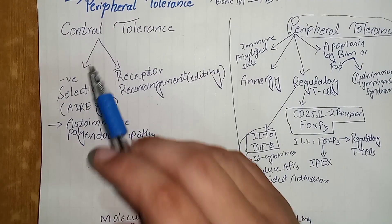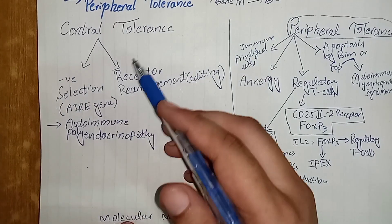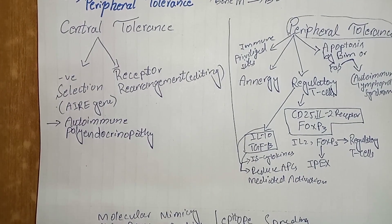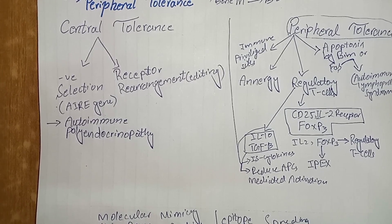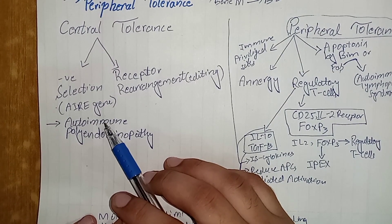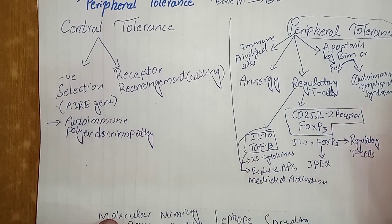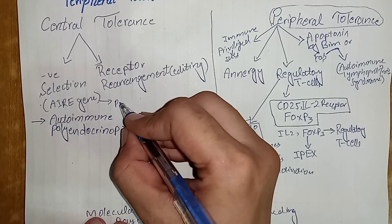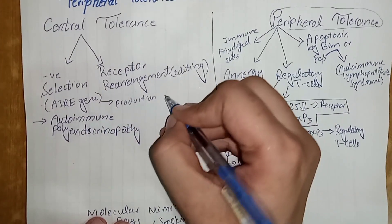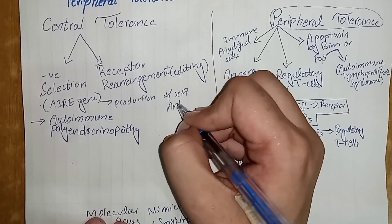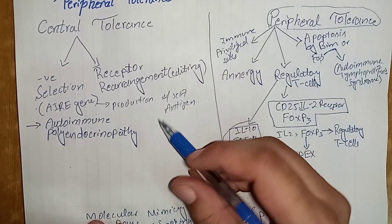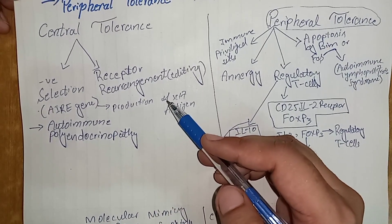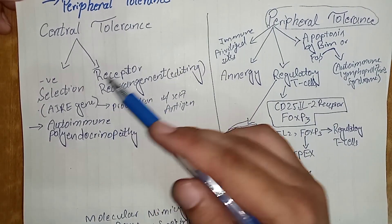Central tolerance occurs in the thymus and bone marrow. In the thymus, T lymphocytes that react to normal body antigens are selected and die by apoptosis — this is called negative selection. This process is controlled by the AIRE gene, or autoimmune regulator gene, which induces the production of various self-antigens in the thymus. These self-antigens are presented to young T lymphocytes, and those that react with them undergo apoptosis and are removed.